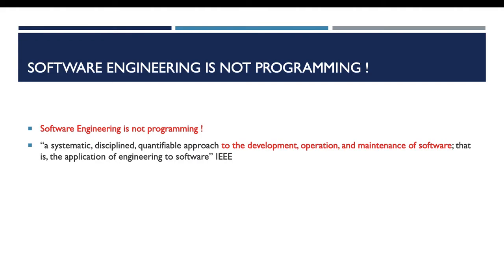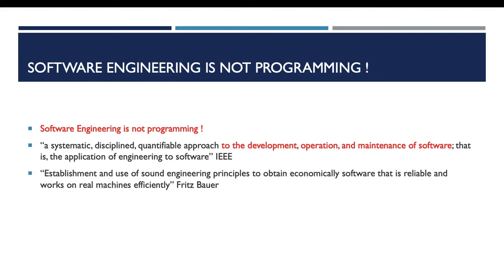Software engineering is a systematic, codisciplined, quantifiable approach to the development, operation, and maintenance of software — and that is the application of engineering. This definition is given by the IEEE organization.